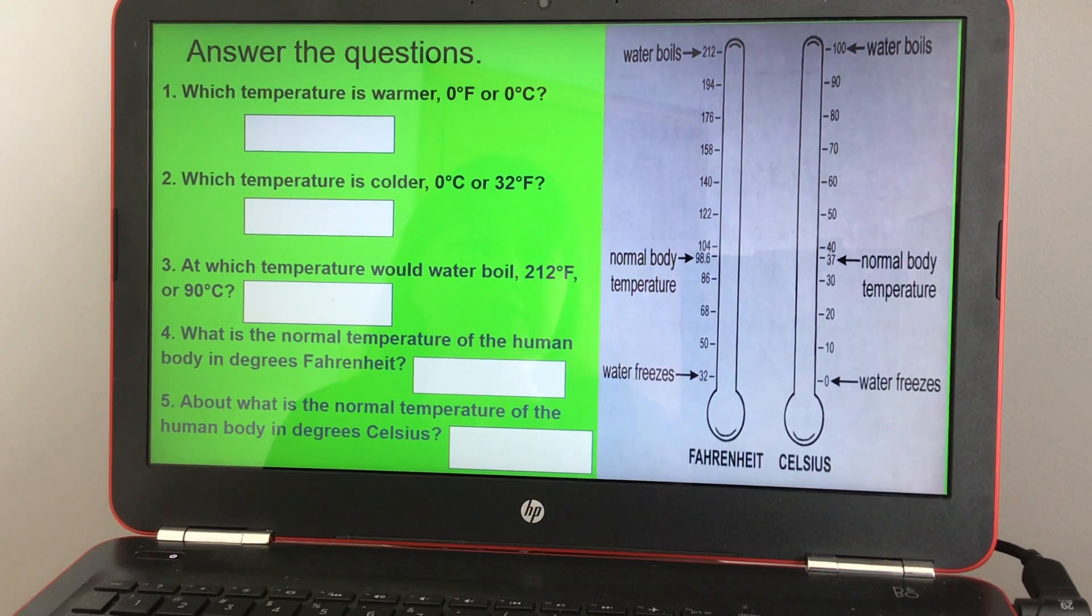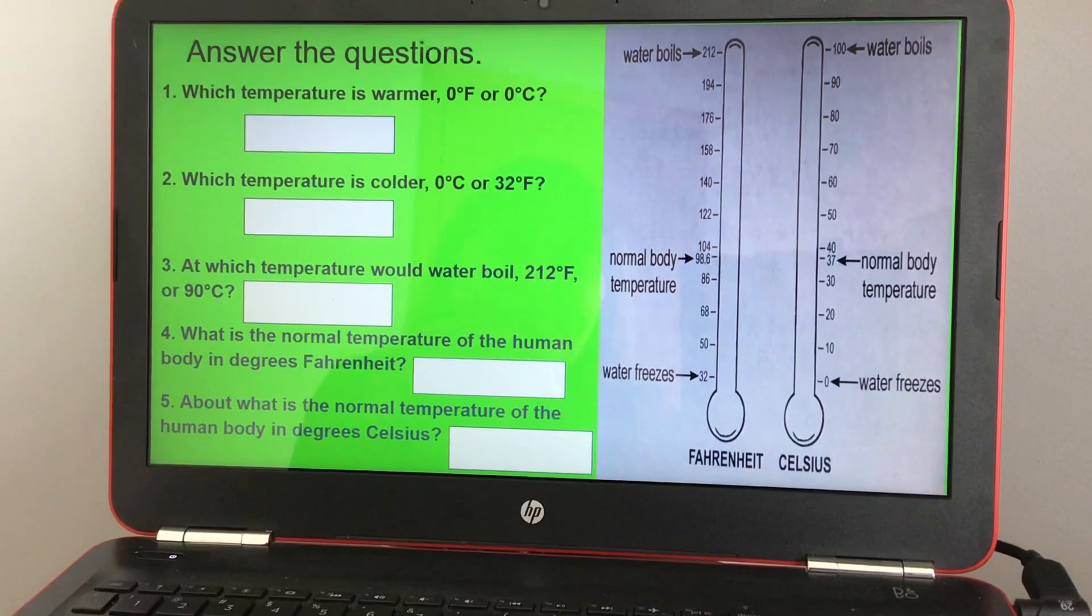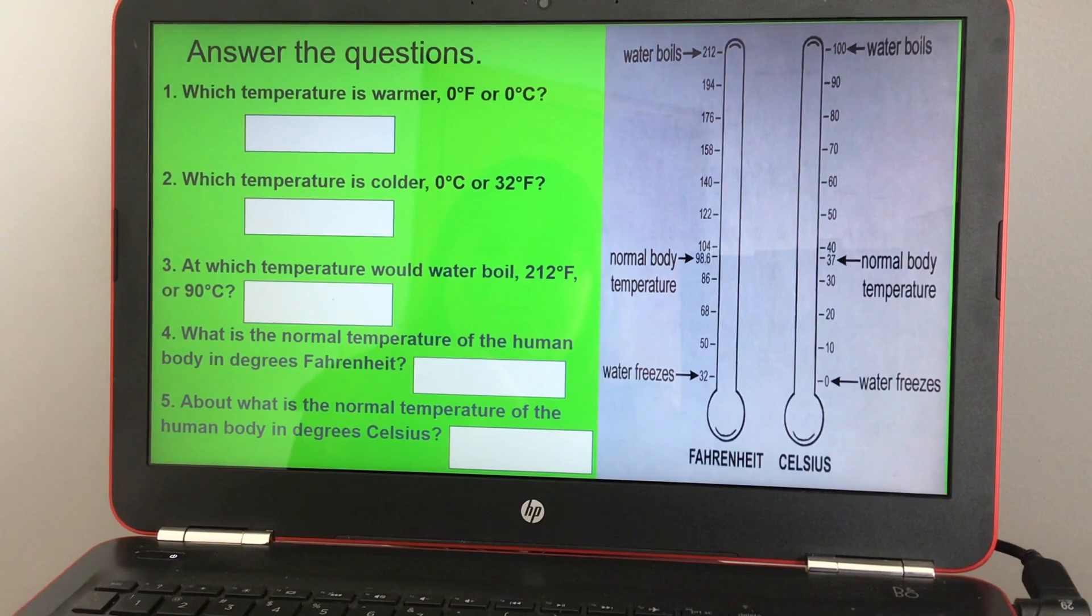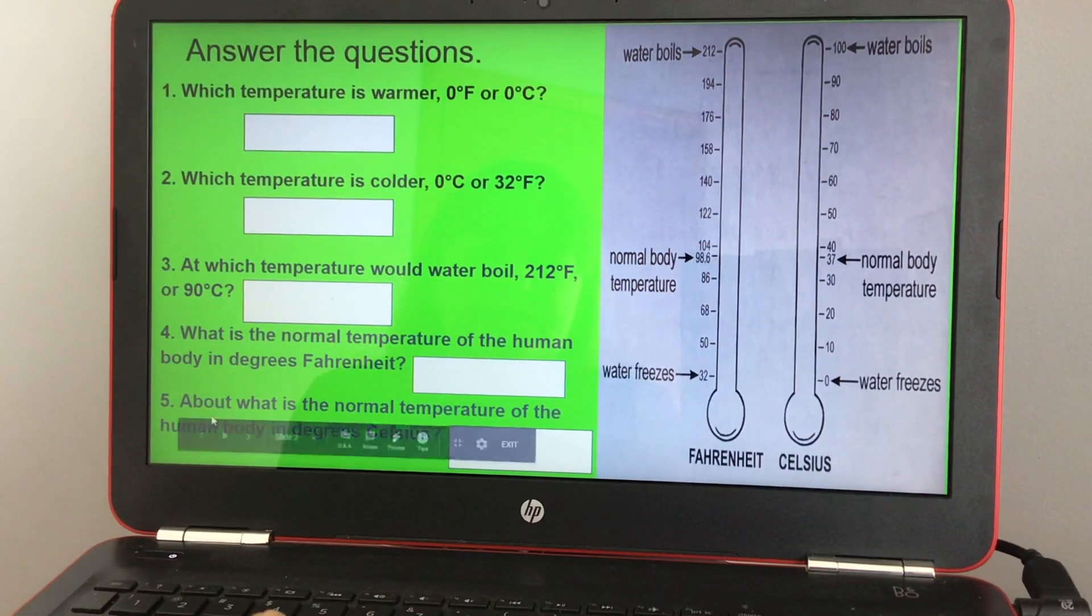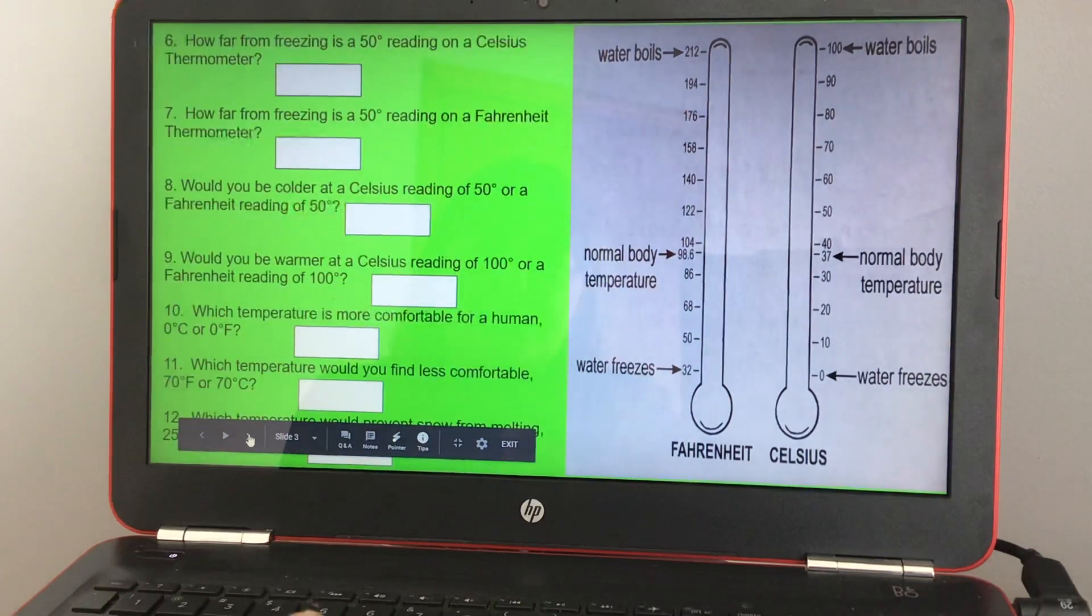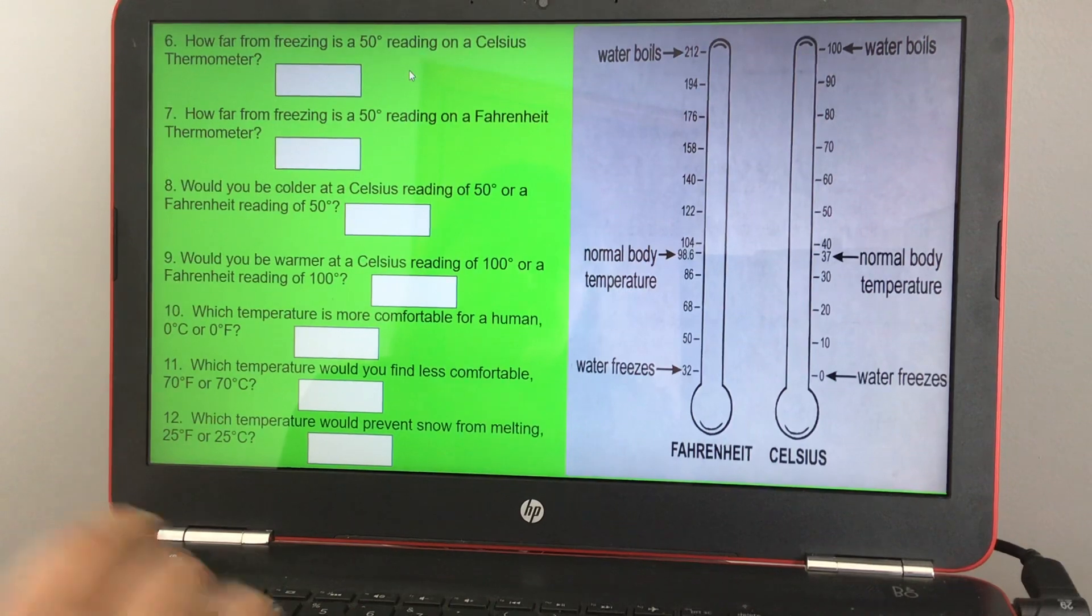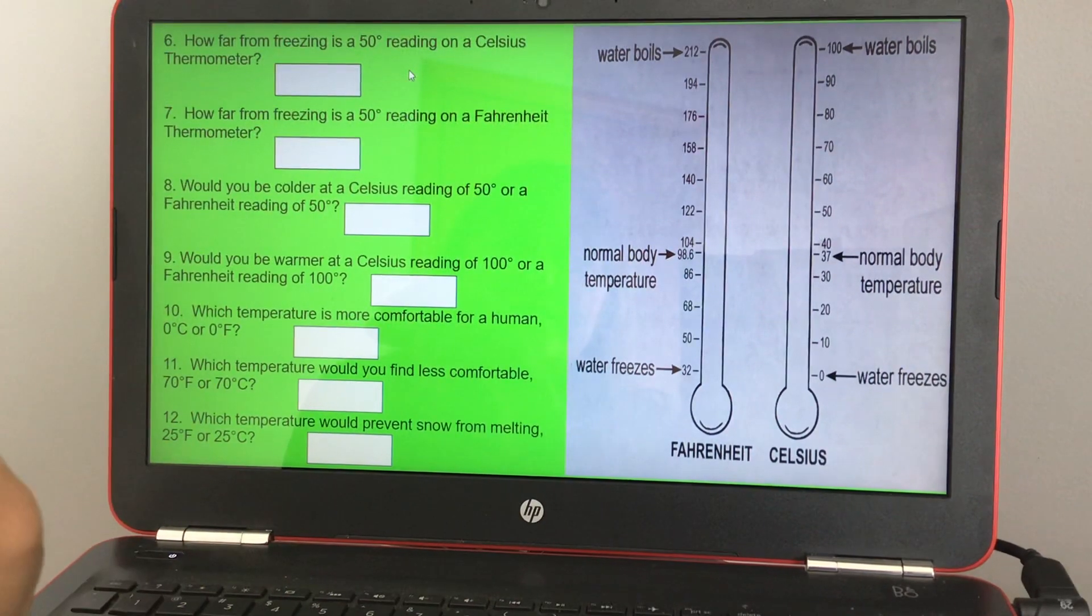So I'm gonna let you do the last two on this sheet. Number four, what is the normal temperature of the human body in degrees Fahrenheit? Well, I already gave you that. And number five, about what is the normal temperature of the human body in degrees Celsius? So I gave you both of those, so I'm gonna let you work on the following questions.